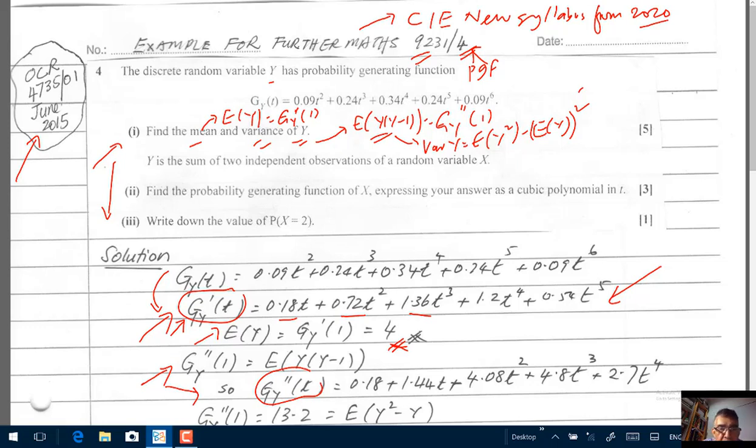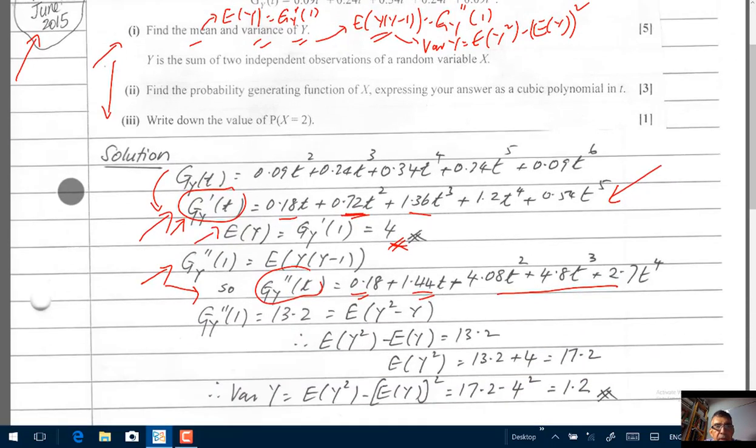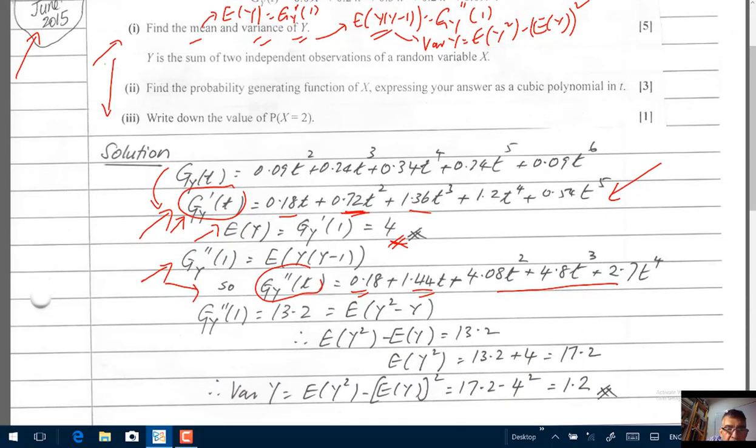Differentiate it, and you will get this, the second order derivative. 0.18t, differentiate it, you will get 0.18. 0.72t², 2 times 72 is 144, you will get 1.44t, and you can work out the rest. So, plug in the value of 1, plug in the value of 1. So, plug in the value of 1, you will get, use a calculator, you will get 13.2.